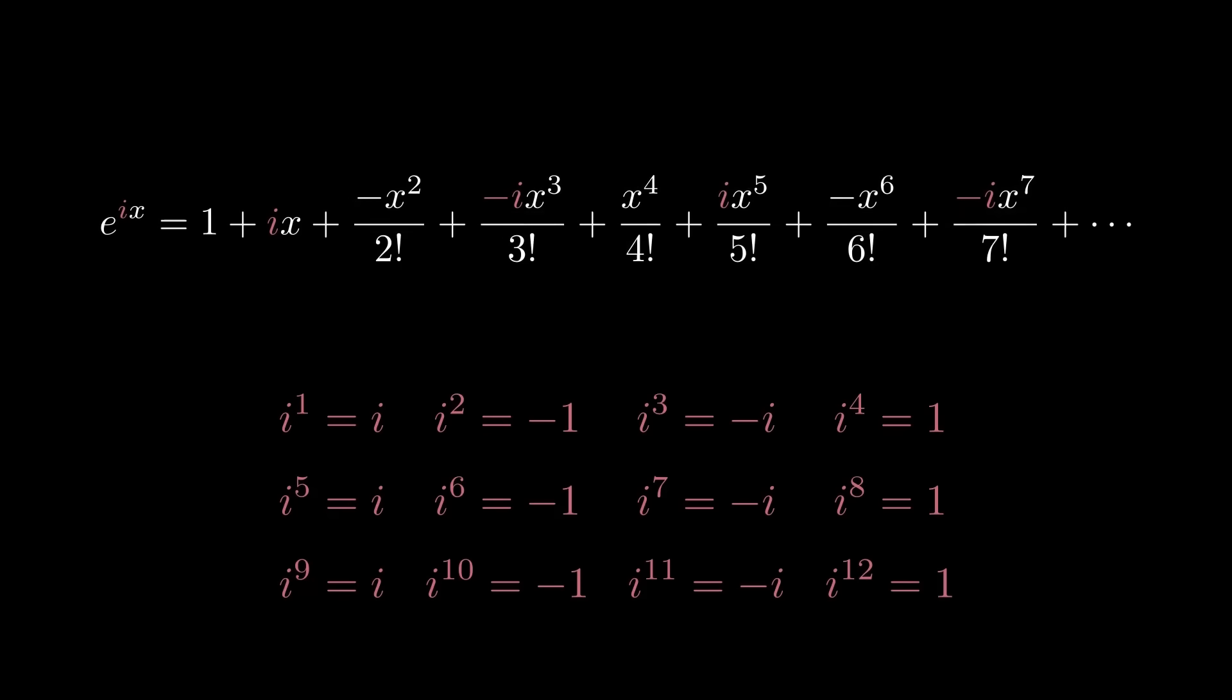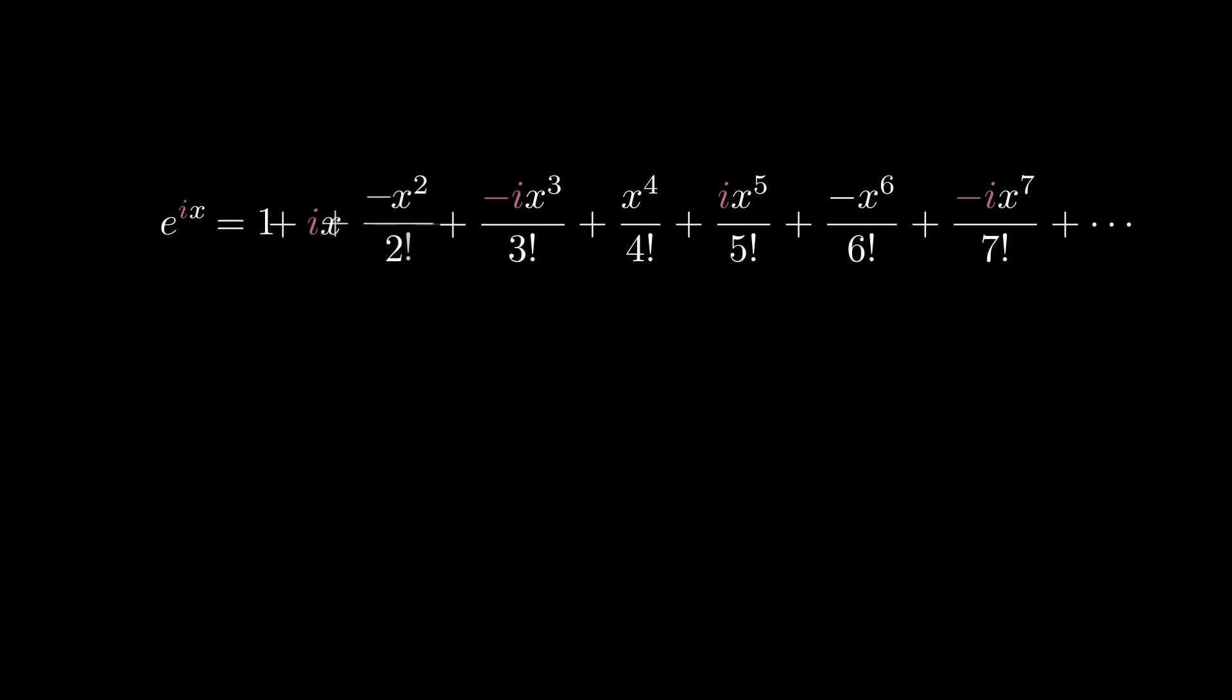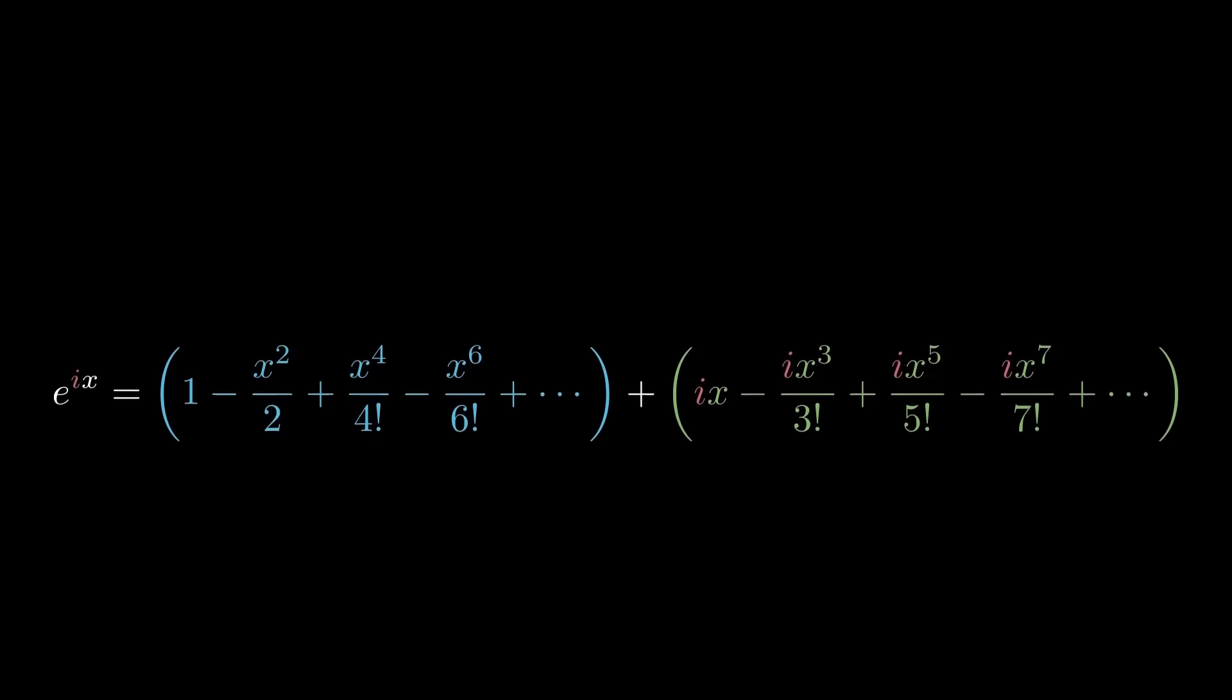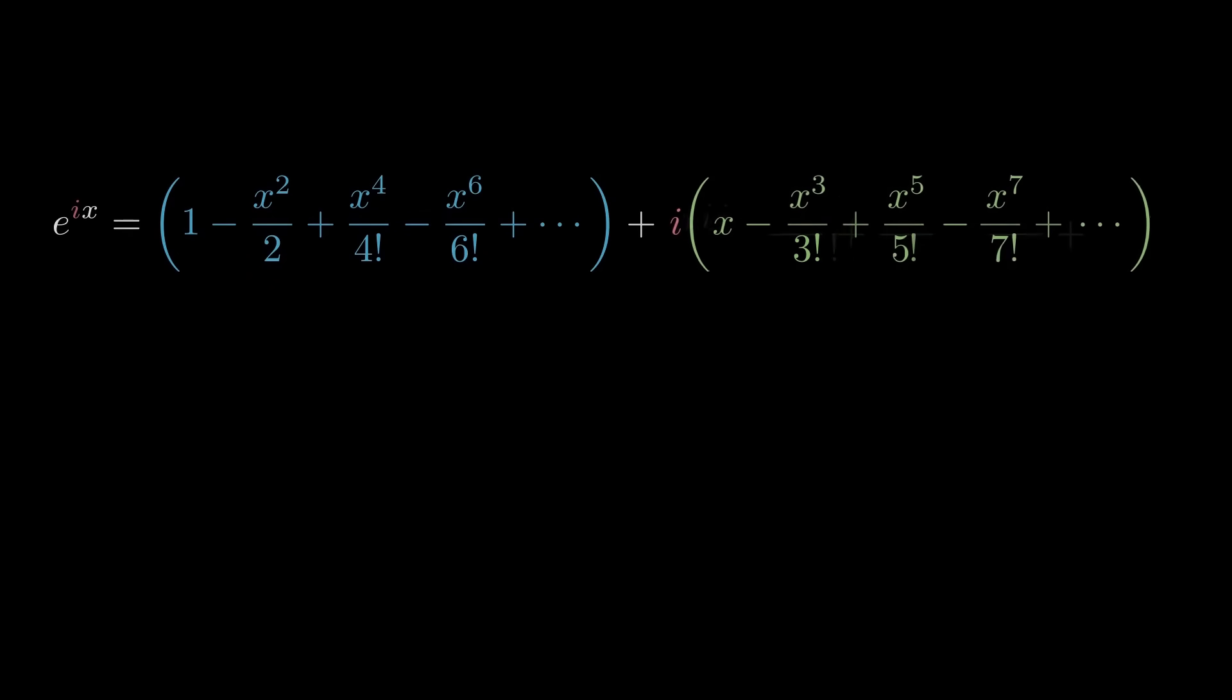And of course we can now, using that logic, we can simplify this expansion a little bit. Now we're going to separate the odd powers and the even power terms into two parentheses bracket terms. And we'll notice that when we factor out an I, we end up with the Taylor expansions for cosine and sine.